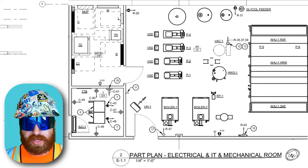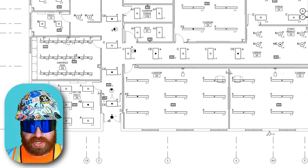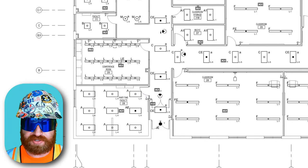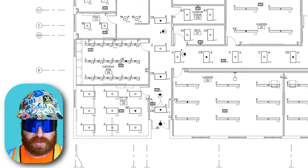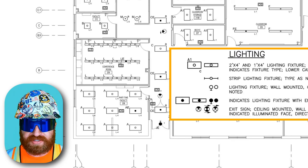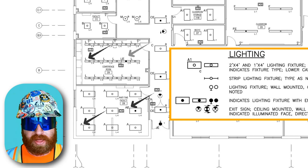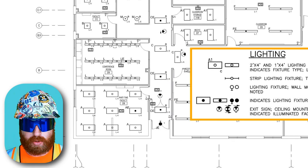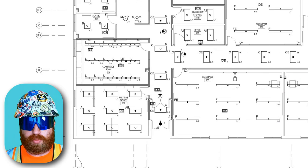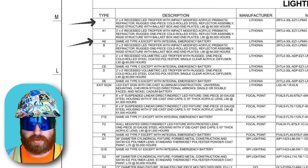Moving on to E2.1, first floor lighting. Zooming in on the left side at the same area as the previous power plan, we can see the lighting serving these two rooms. From our legend, these symbols are for one-foot by four-foot fixtures as well as two-foot by four-foot fixtures. The A, AE, L, and LE are fixture types from our lighting fixture schedule. Flipping back to E0.2, we see these specific lighting fixtures intended for this room.